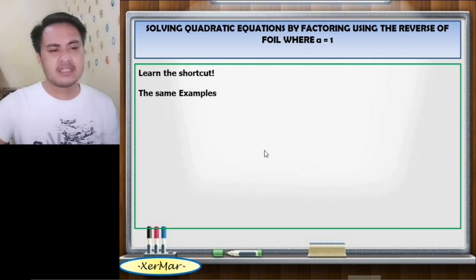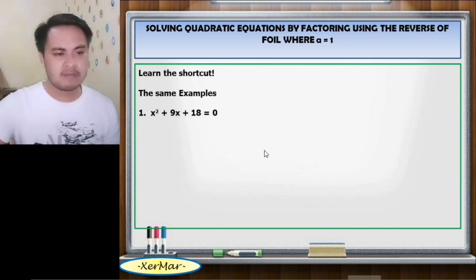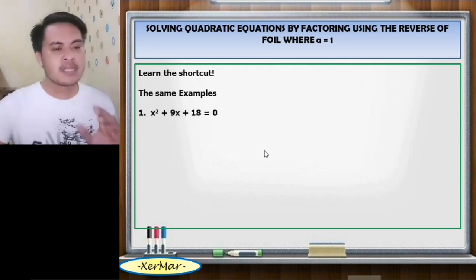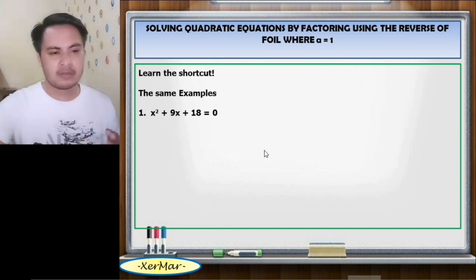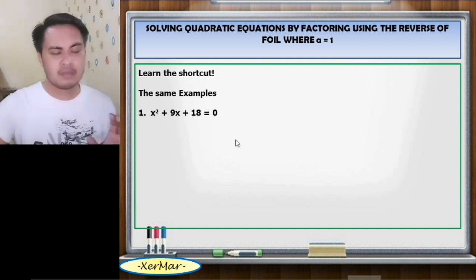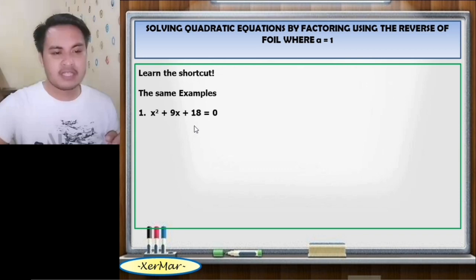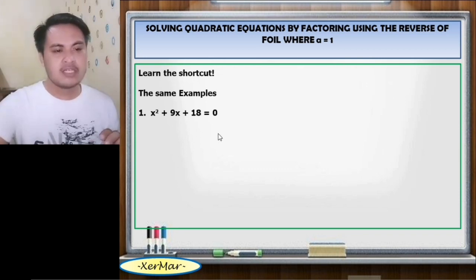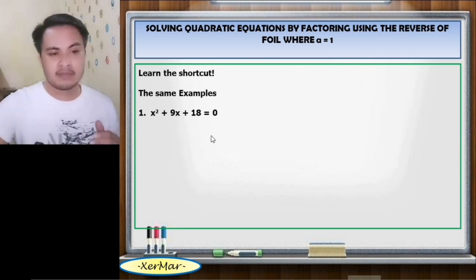Using the same examples, we have Number 1: x squared plus 9x plus 18 equals 0. As you can remember, the values of x here are negative 3 and negative 6.